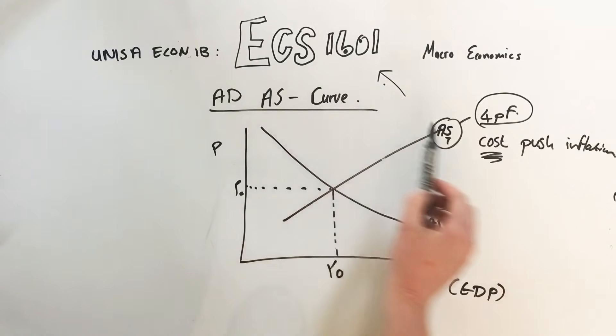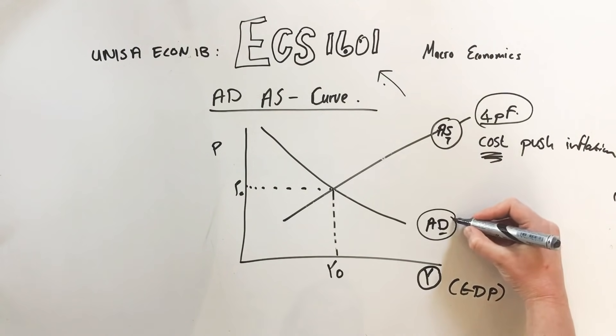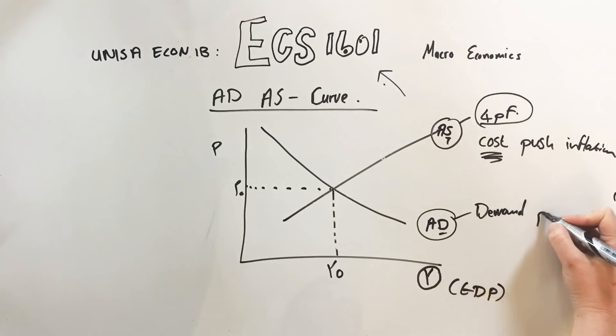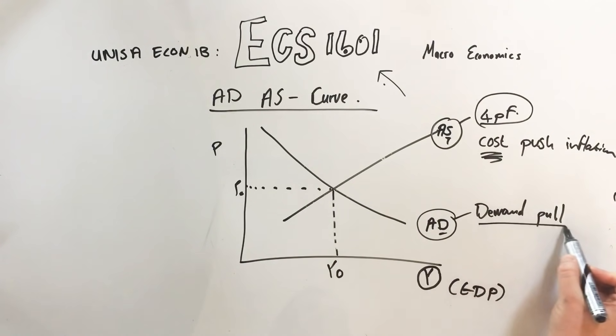On the aggregate demand side, it is demand pull inflation. So if this curve had to shift to the right, our new price would be higher, the price level would increase, but it would be demand pull inflation.